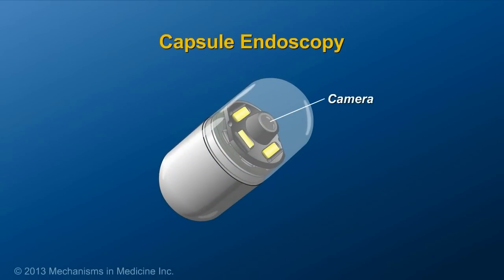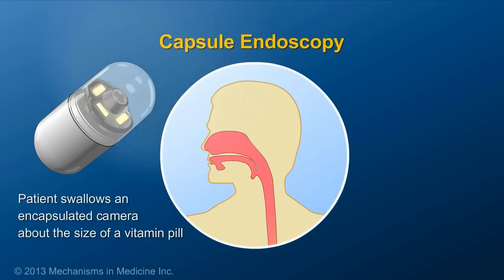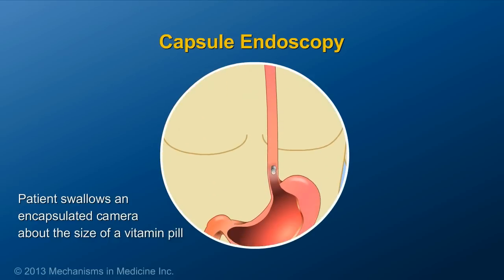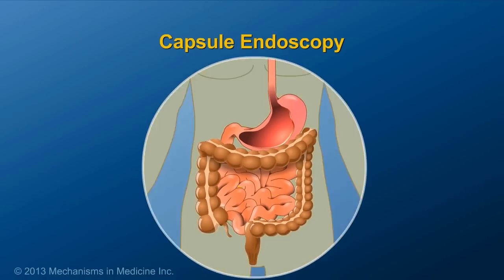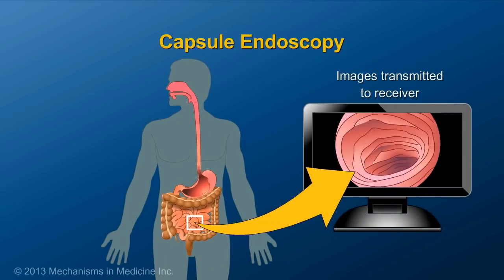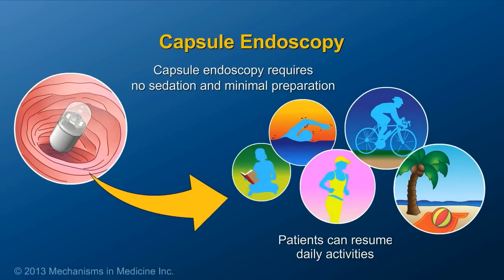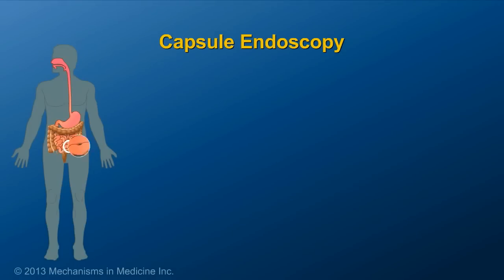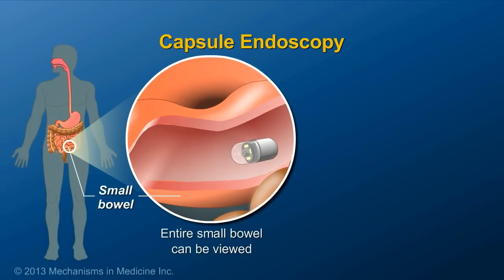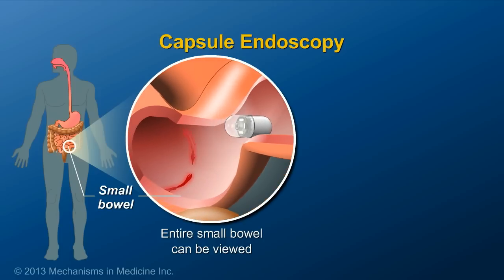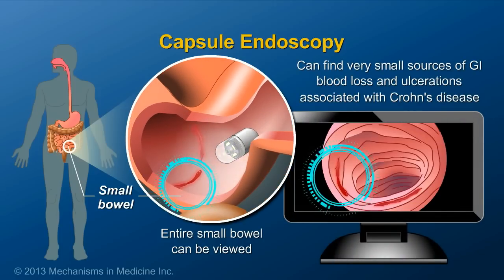Capsule endoscopy is a relatively new procedure during which the patient swallows an encapsulated video camera about the size of a vitamin pill. The camera transmits images to a receiver located outside the patient. Capsule endoscopy requires no sedation, minimal preparation, and patients can resume daily activities after swallowing the capsule. It allows viewing of the entire small bowel and is the most sensitive way to see the lining of the small intestine. It can identify ulcerations associated with Crohn's disease, even when upper endoscopy and colonoscopy are negative.